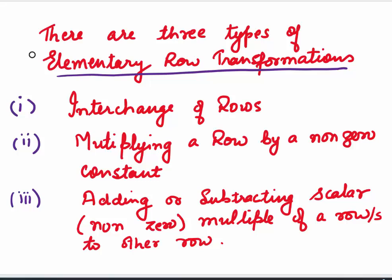We do three types of elementary row transformations. The first one is interchanging rows in a given matrix. The second is multiplying a row by a non-zero constant. The third transformation is adding or subtracting a scalar multiple of one row or more than one row to some other row. We can also do column transformations, but row transformations are always easier. Remember, we can't mix row and column transformations because that leads to confusion.